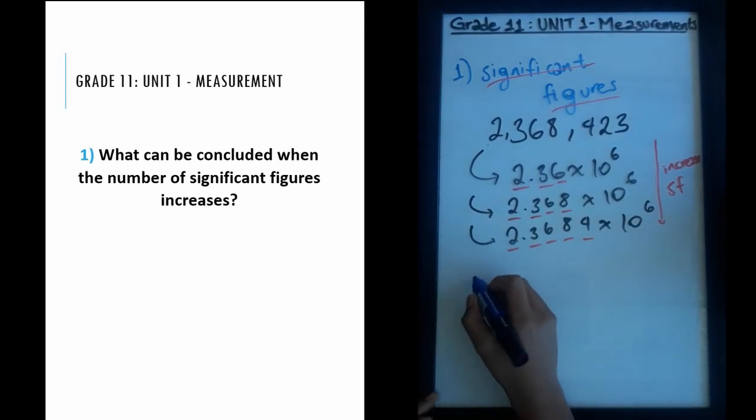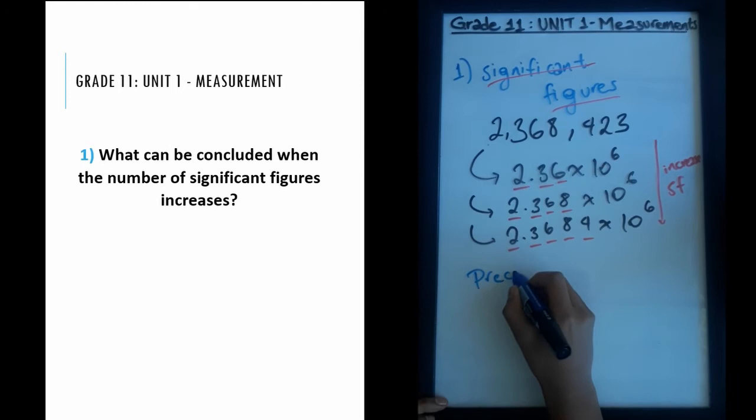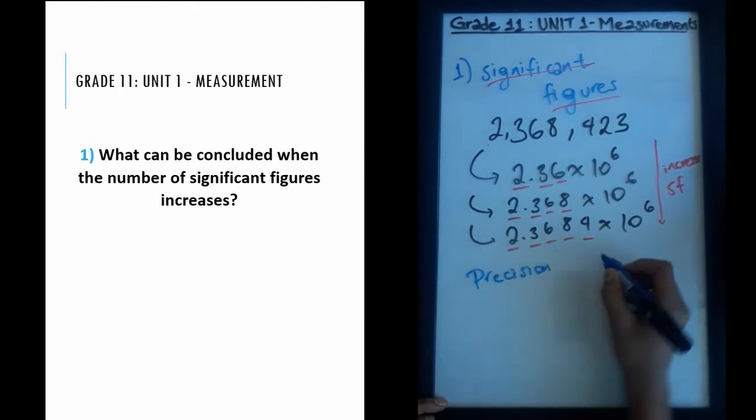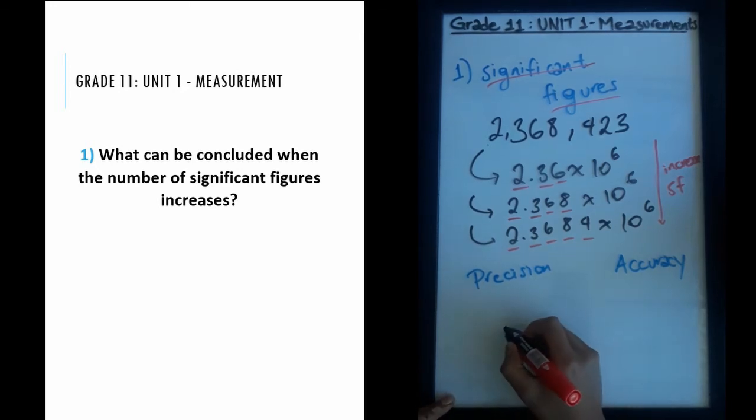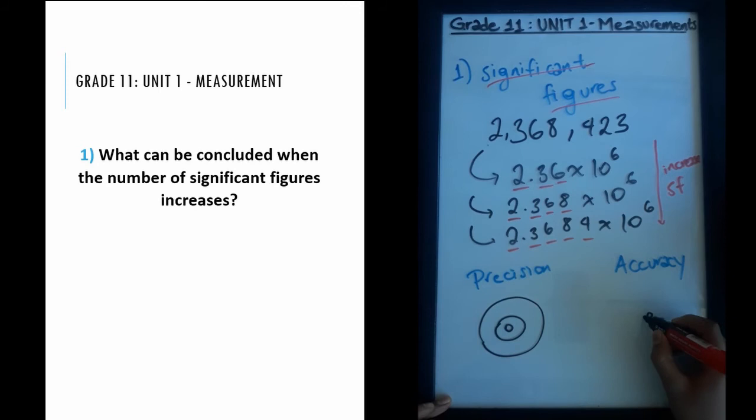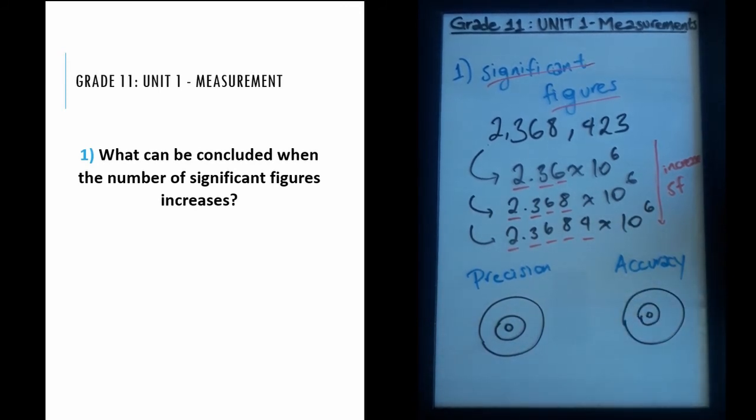Two properties of measurements that we have to know are precision and accuracy. These concepts are sometimes confused with each other, but they're actually very different. A good way to show their difference is to use a target system. Let's say we have two targets.